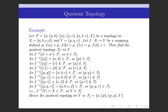The inverse image of {P, Q, R} = {A, B, C, D} = X, which is open in X, so Y belongs to the quotient topology. Hence the quotient topology on Y is T_F = {φ, {P}, {P, Q}, Y}. This is the required quotient topology.